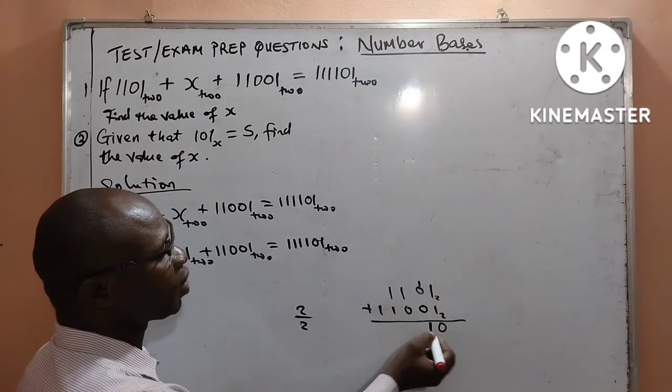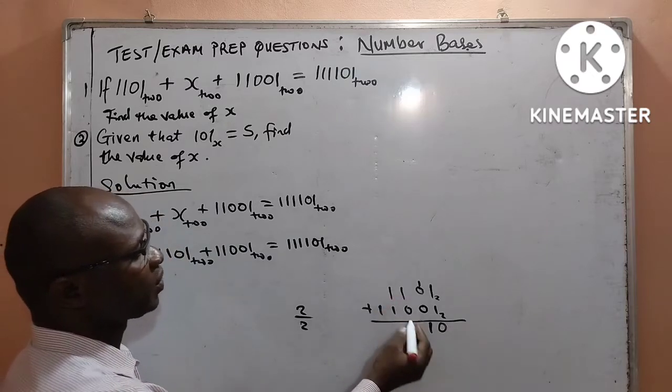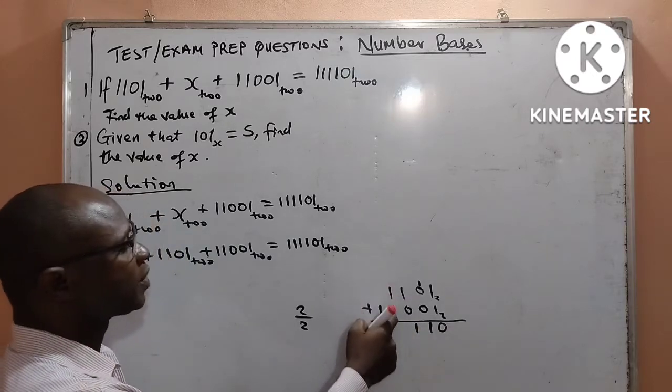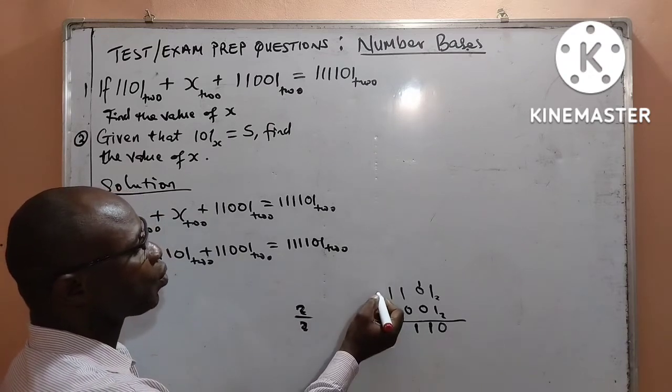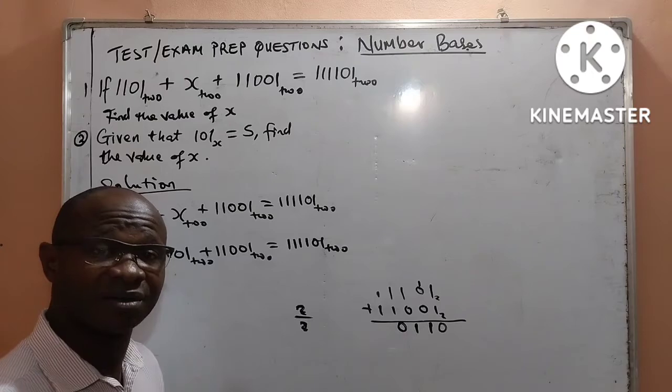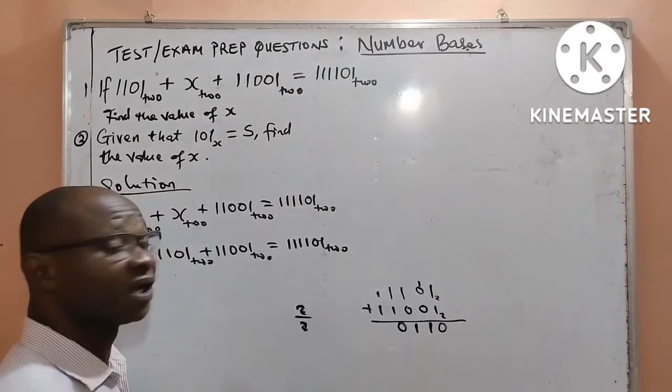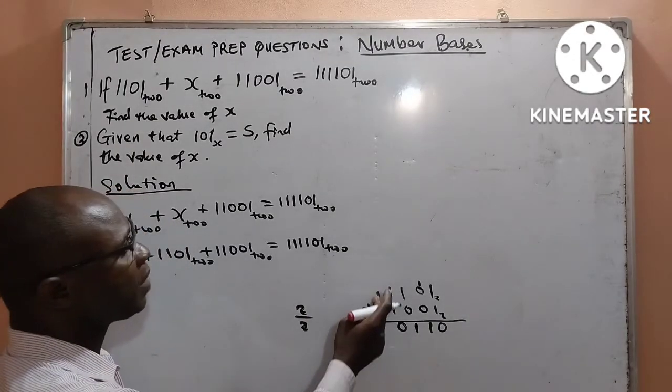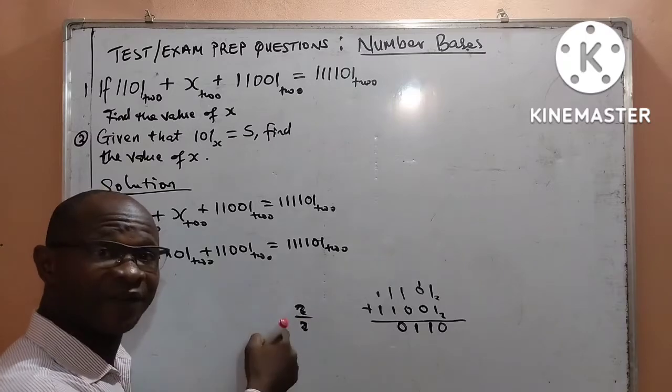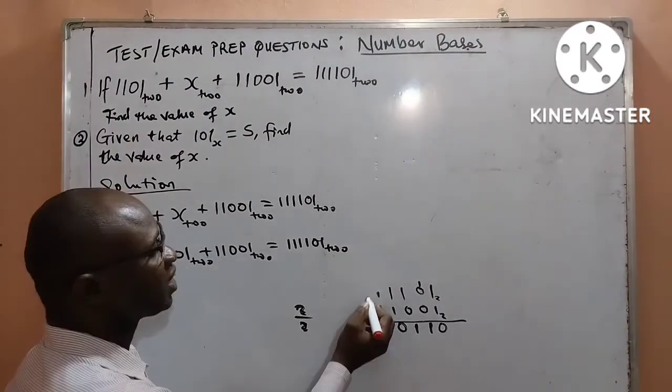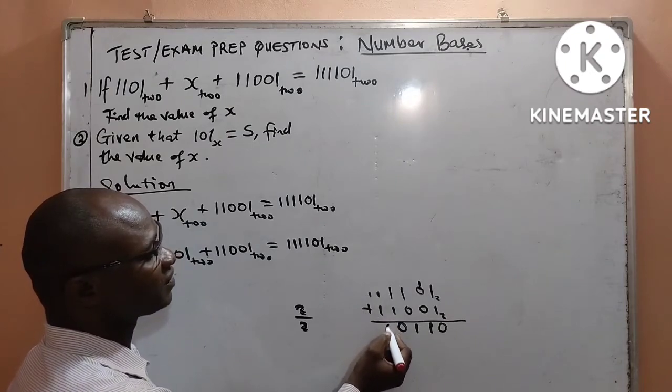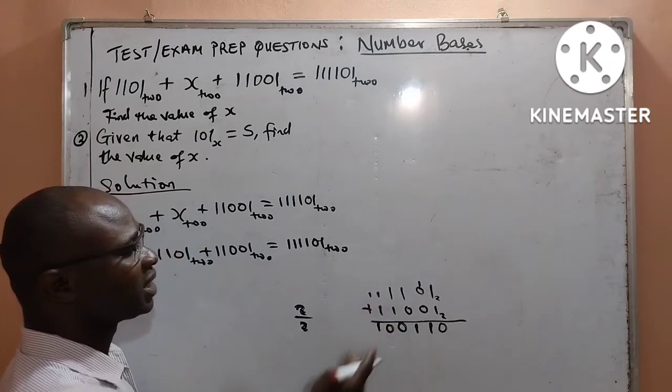Again, 1 plus 0 will give me 1. 1 plus 0 will give me 1. 1 plus 1 will still give me 2. I divide it by 2 again. I will get 1 remainder 0. I write the remainder and move the quotient. Then, 1 plus 1 will still give me 2. I divide it by 2 because it is in base 2. Then, I will get 1 remainder 0. Then, bring down 1.